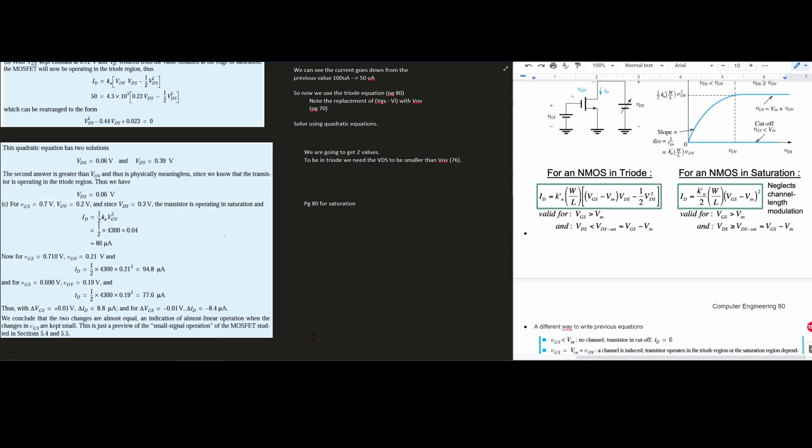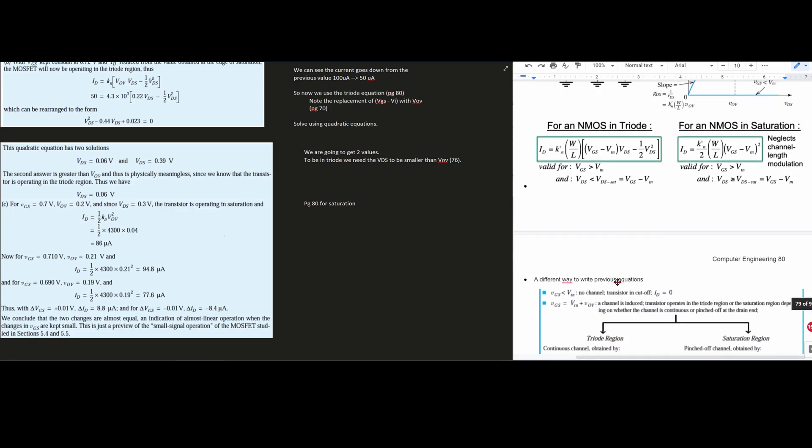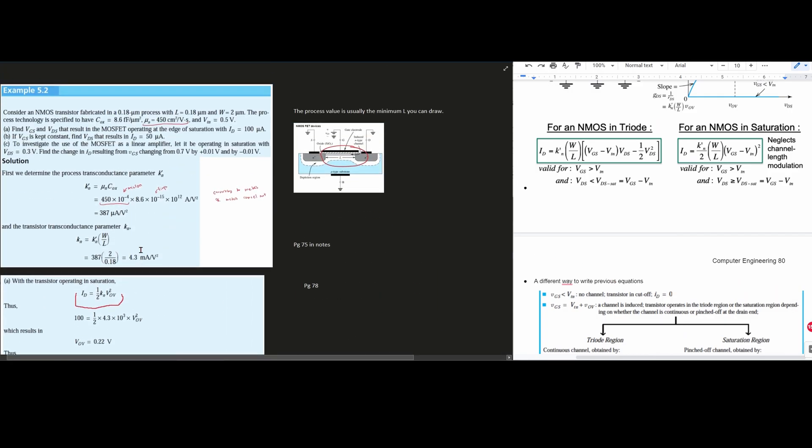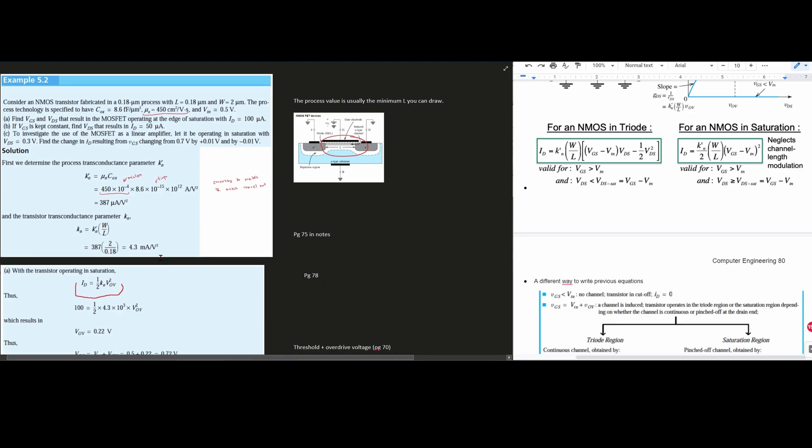We can conclude that the two changes are almost equal, an indication of almost linear operation when the changes in VGS are kept small. It's just a preview of small signal operations of the MOSFETs studied in our sections 5.4 and 5.5. We have these notes linked below the like button and we're going to go over more problems too. But that is it for this one. It contained a lot of useful information that is great to go over.